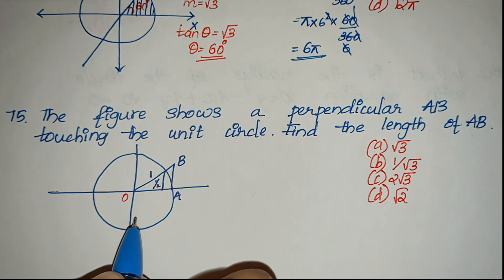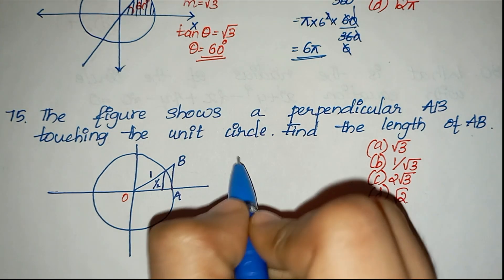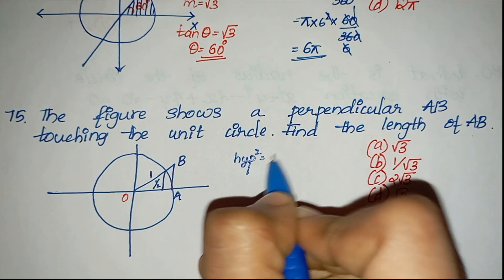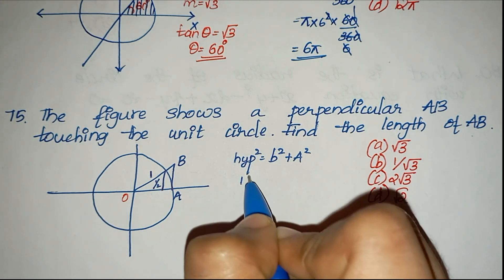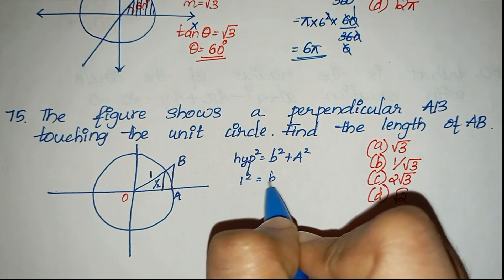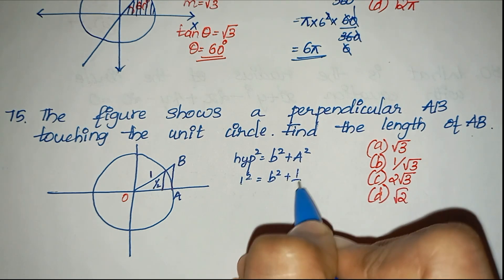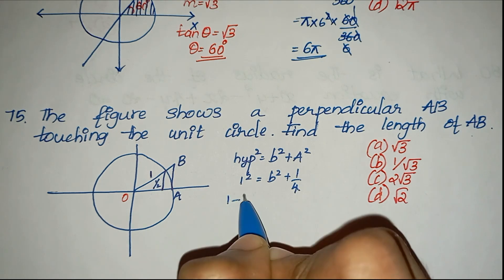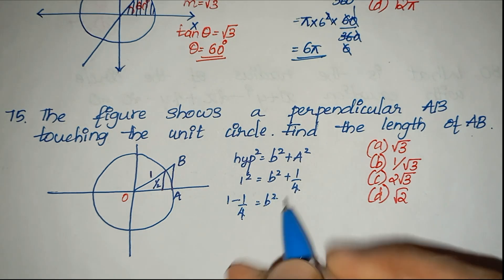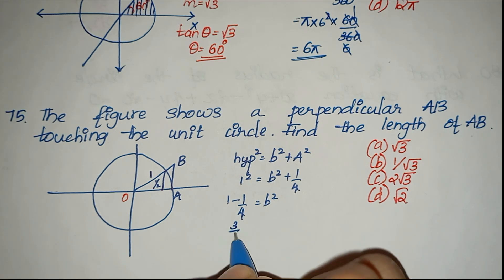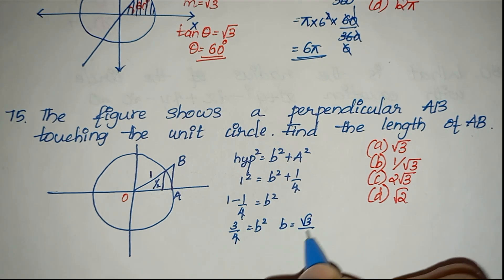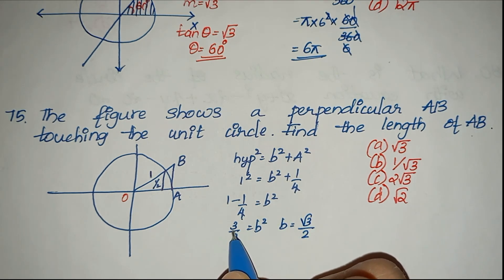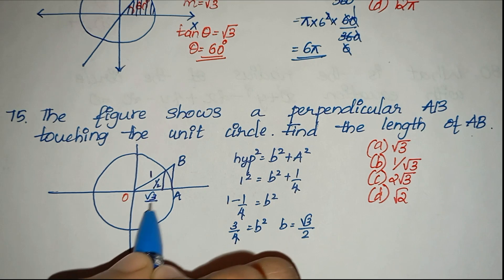Here the hypotenuse is 1 and one side is 1/2. Using the Pythagorean theorem: hypotenuse squared equals base squared plus altitude squared. So 1 squared equals base squared plus (1/2) squared. That gives 1 minus 1/4 equals b squared, so b squared equals 3/4. Therefore b equals root 3 by 2. The altitude is root 3 by 2.